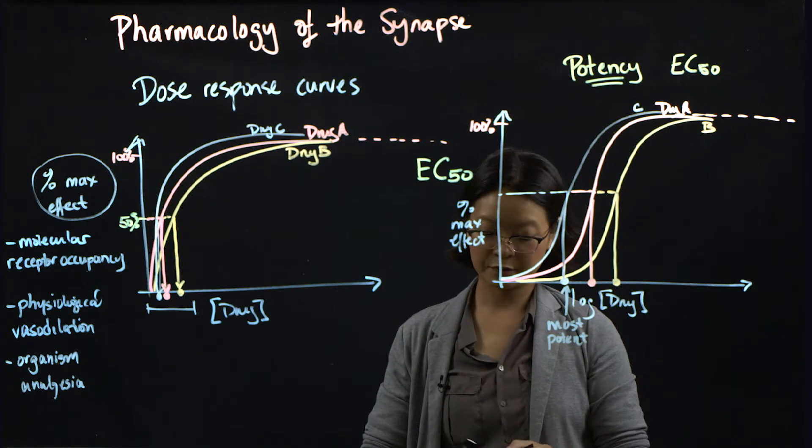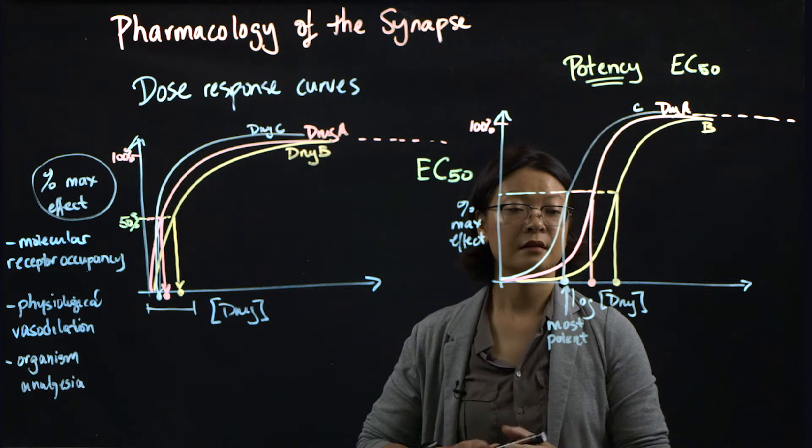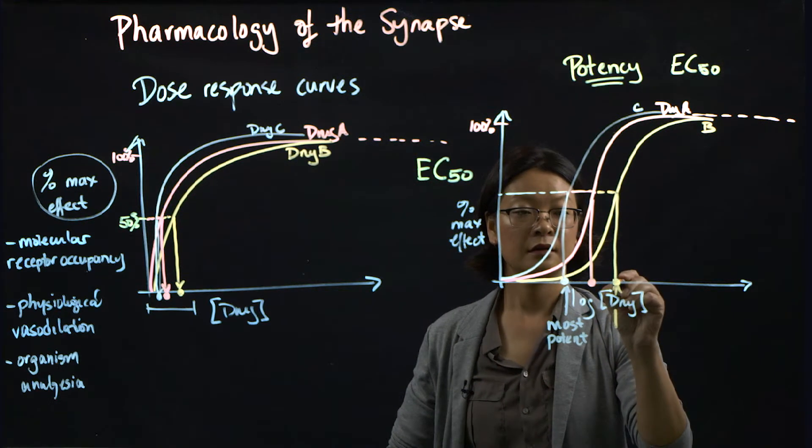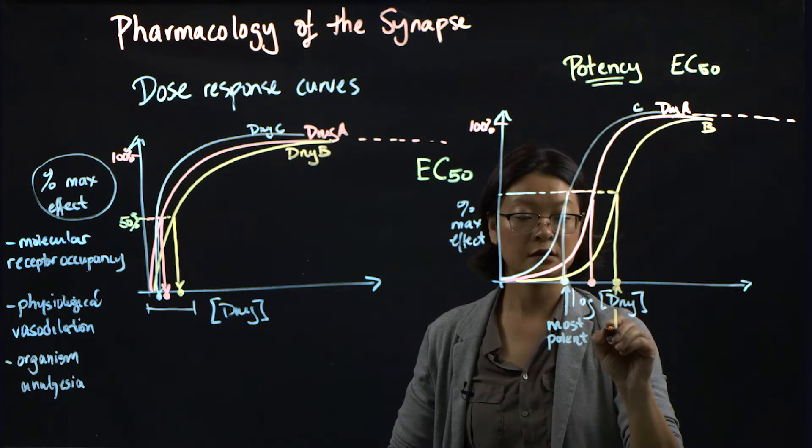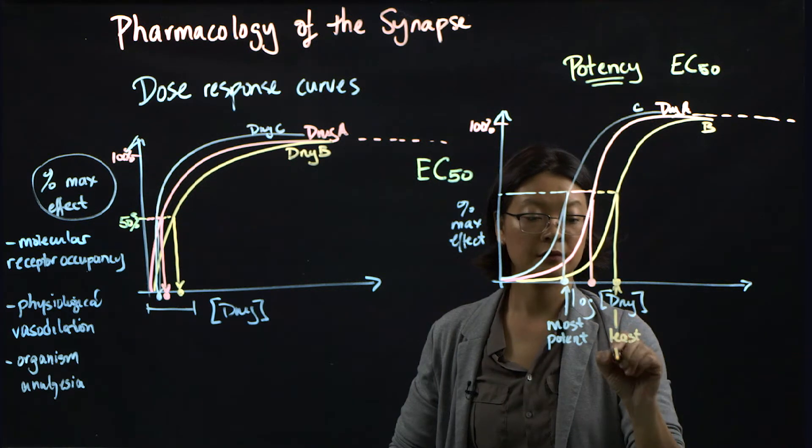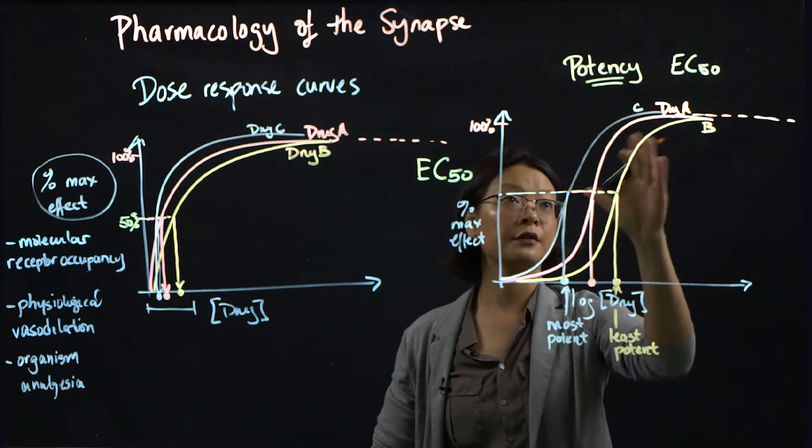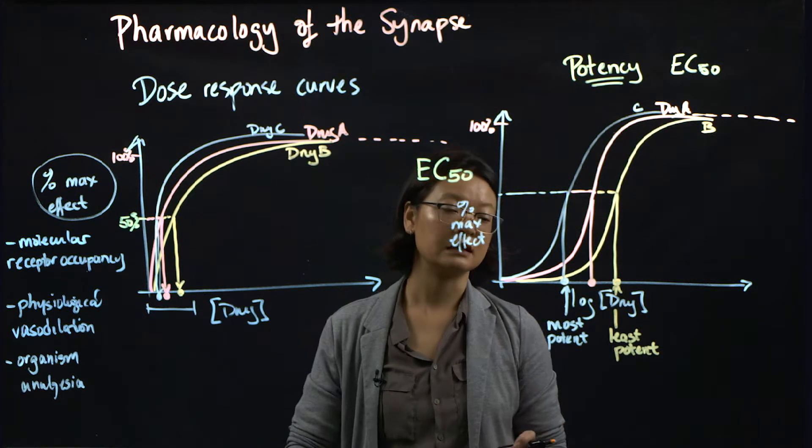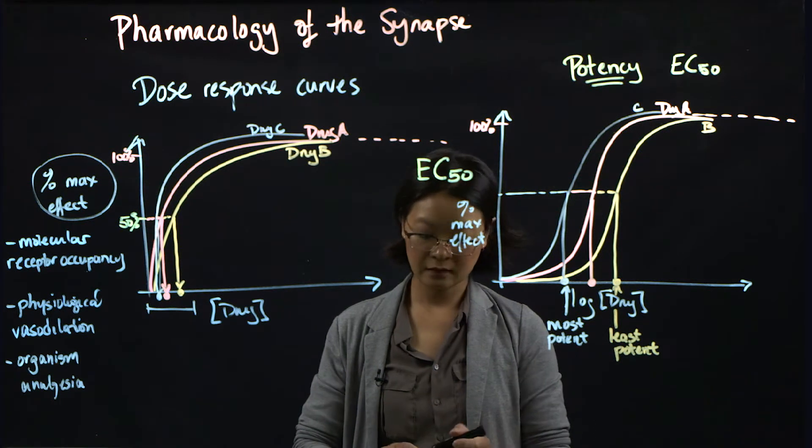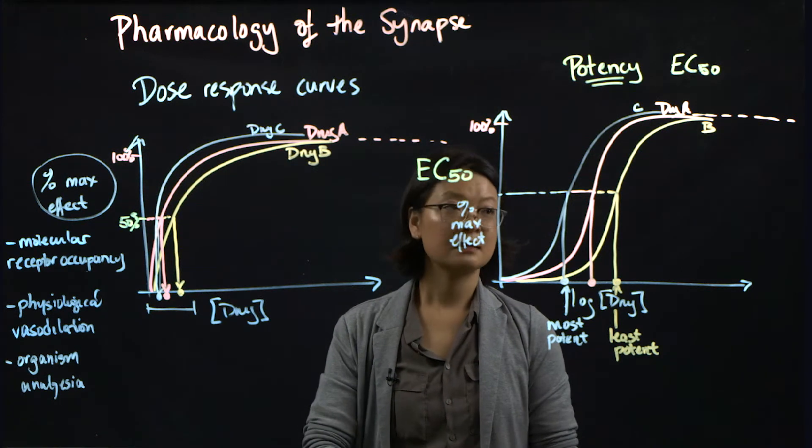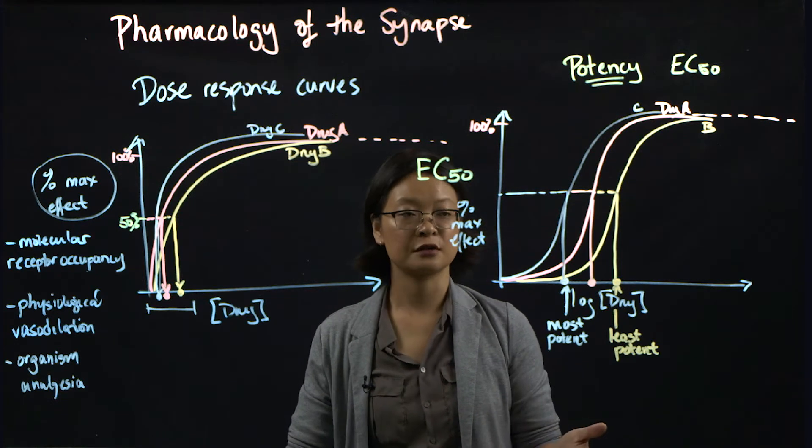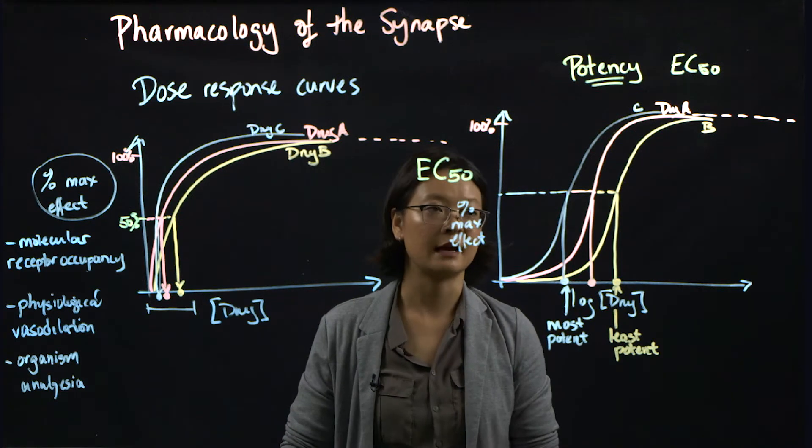Versus drug B, which has the highest EC50 concentration, is the least potent. So potency is a relative measure based off of the EC50. This means that a more potent drug, you use less of the drug concentration to produce your 50 percent maximum effect.